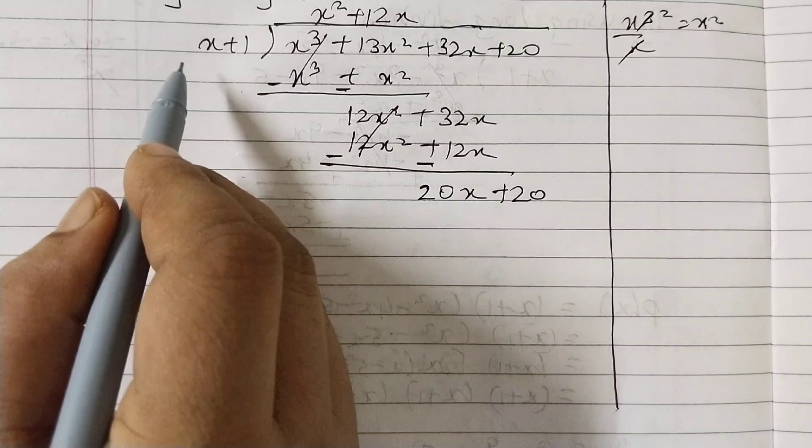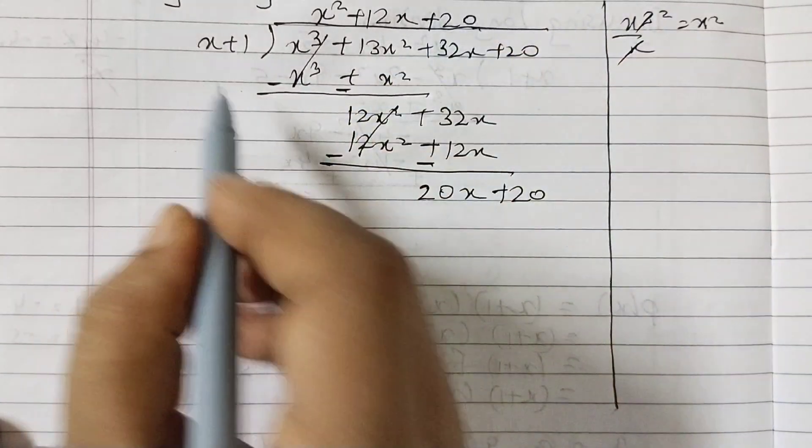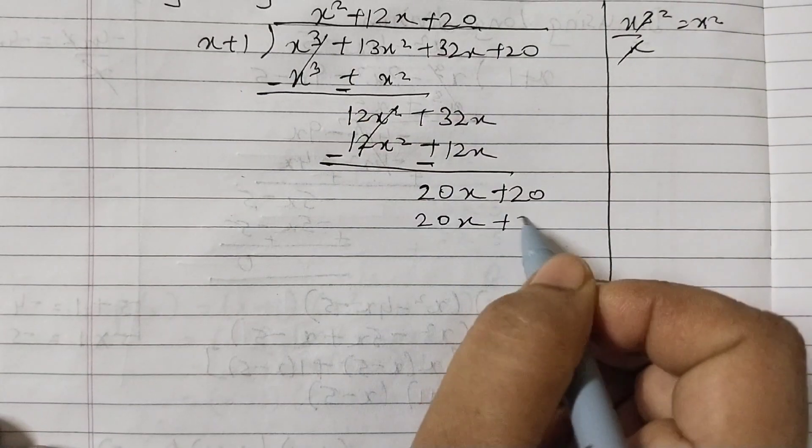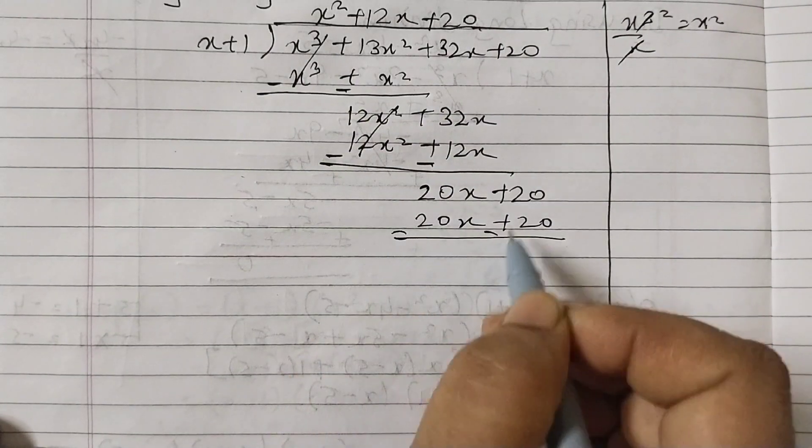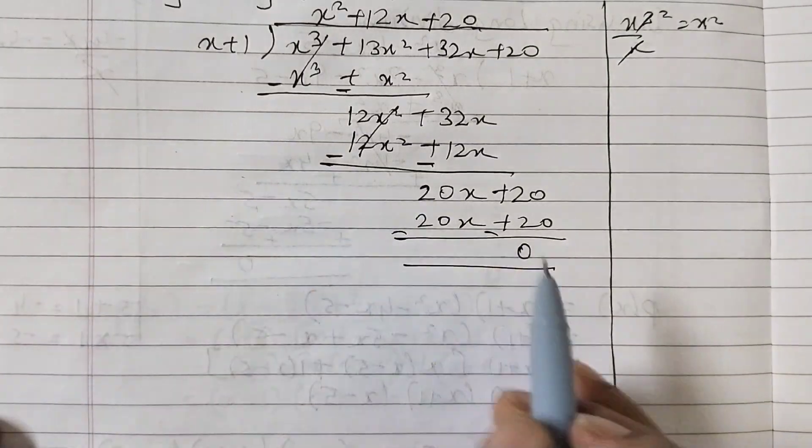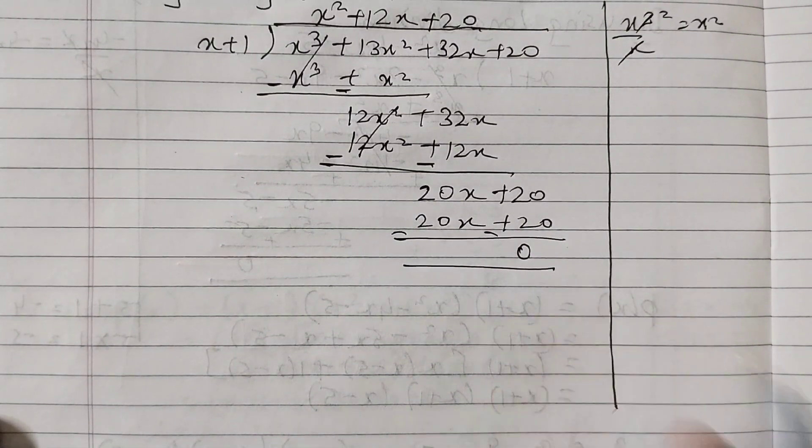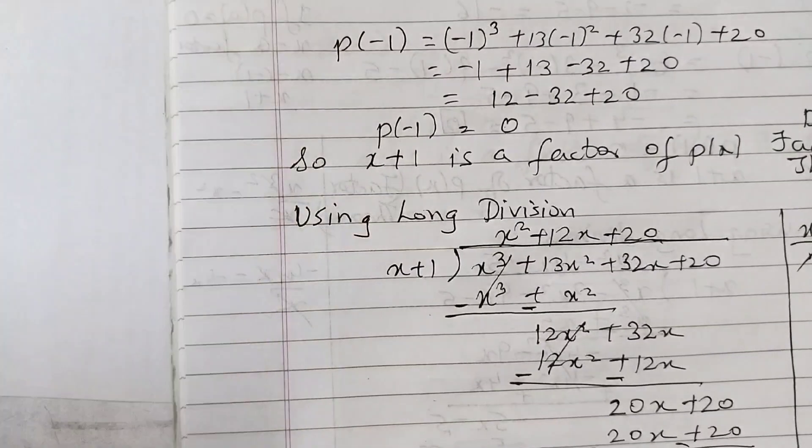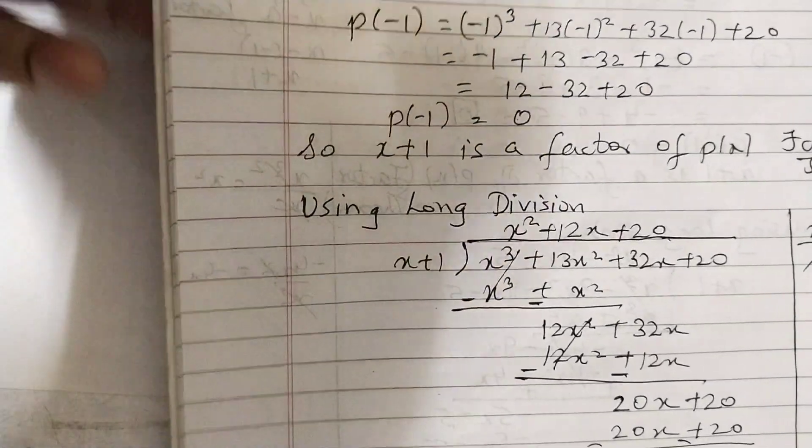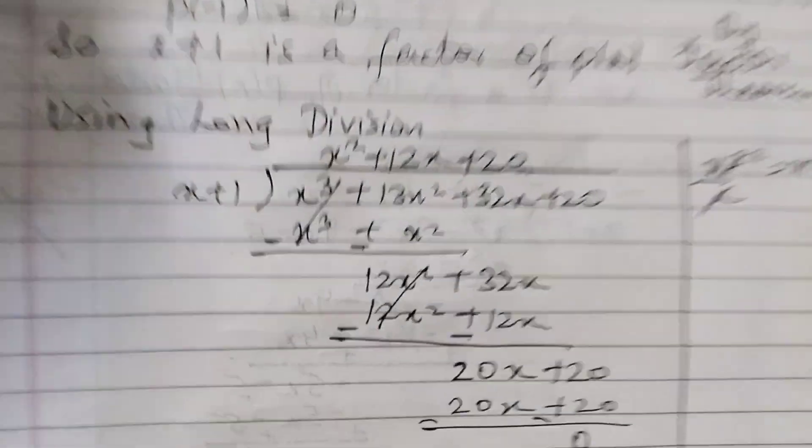20x ÷ x = 20. So multiply by 20: 20x and 20. Same expression, so this becomes 0. Whenever we are dividing by a factor, we always get the remainder as 0. Now we use the formula: dividend = divisor × quotient + remainder. Remainder is 0, so we can ignore it.